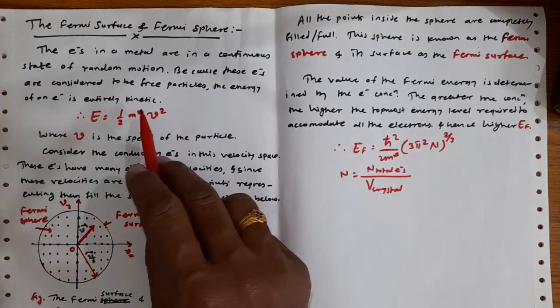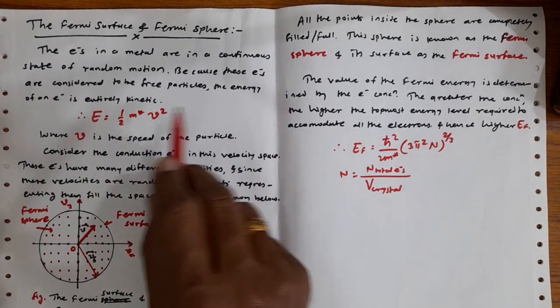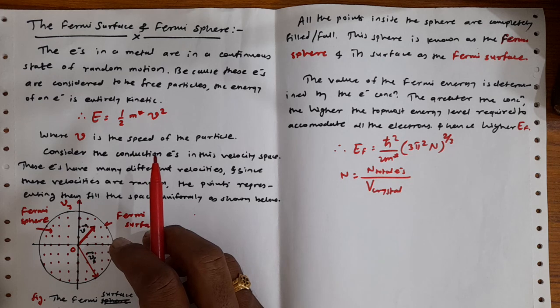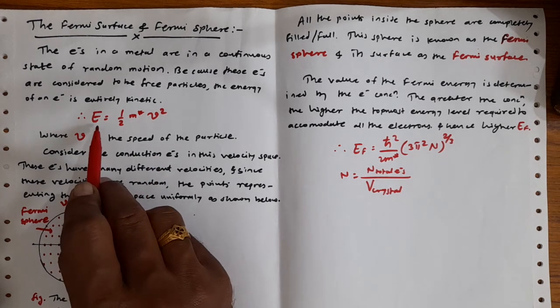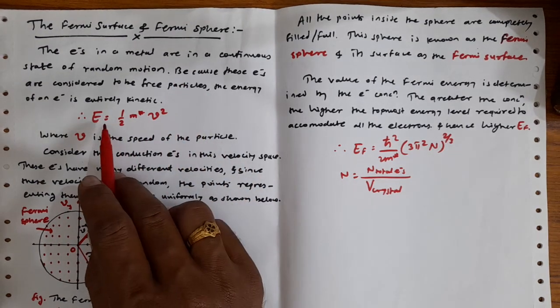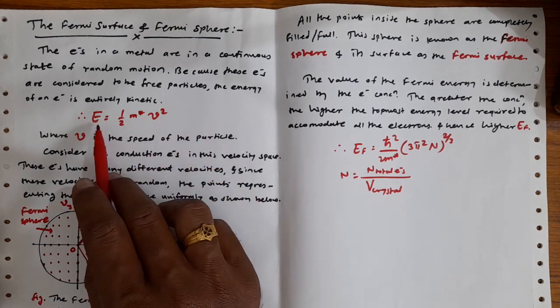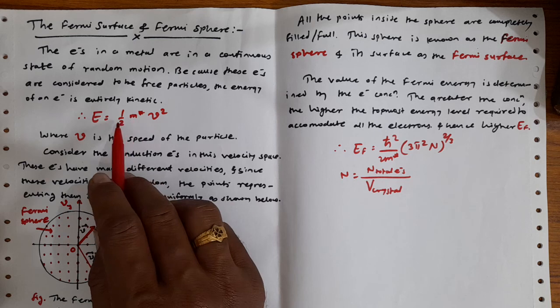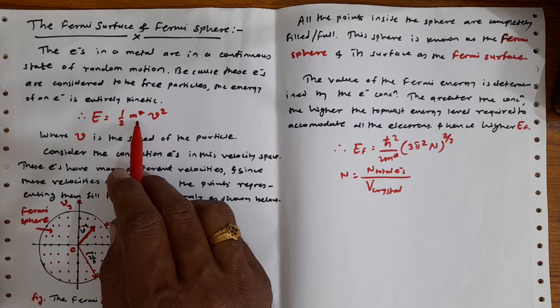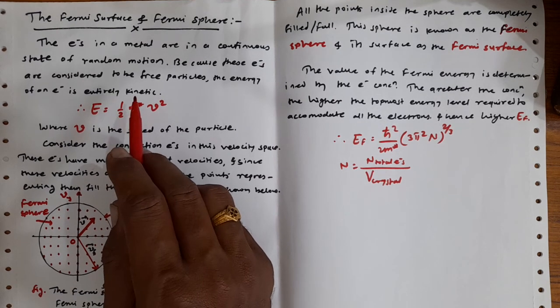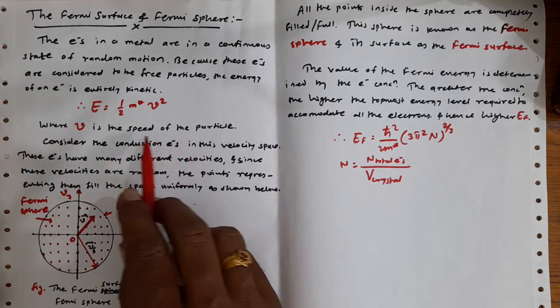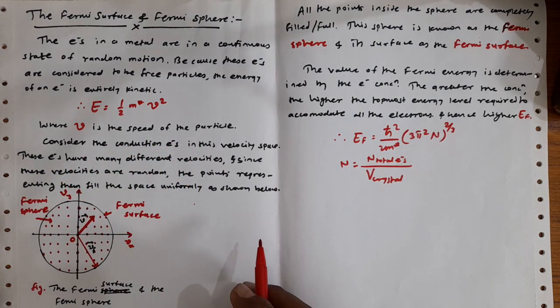Why? Because these electrons are considered to be free particles and the energy of these electrons is entirely kinetic. They have energy which is entirely kinetic, so we can write down its total energy. Because there are free electrons, no potential energy they possess, so phi becomes zero. So its total energy is only pure kinetic energy. So I can write down this total energy is equal to half m star v square. Instead of having the rest mass they are possessing the effective mass. m star v square, v is nothing but the velocity of that electron. Thus v is the speed of that electron or particle.